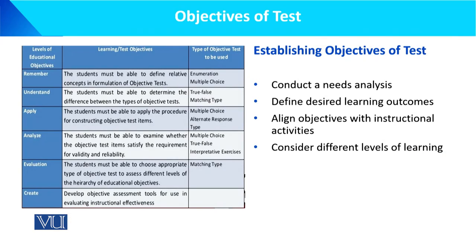When establishing objectives of the test, you need to conduct a needs analysis first. Then define desired learning outcomes, align objectives with instructional activities — meaning align them with what the teacher does in the classroom — and consider different levels of learning when creating objectives for students.